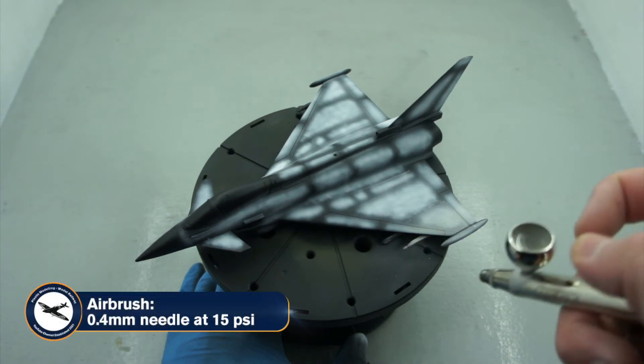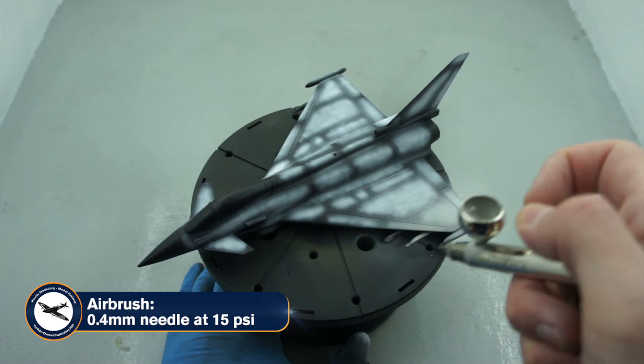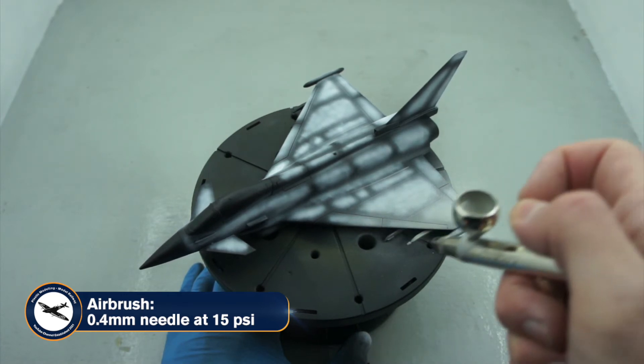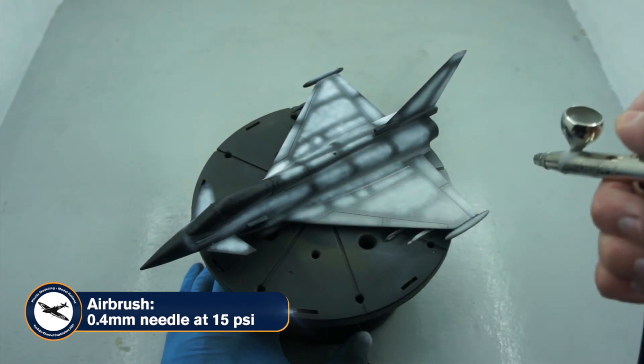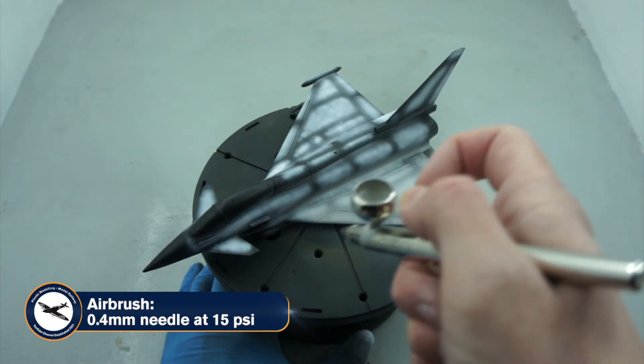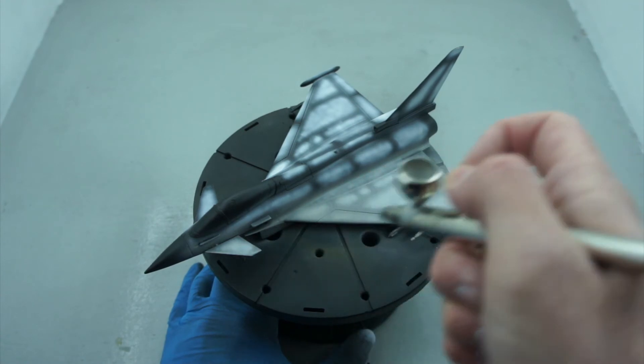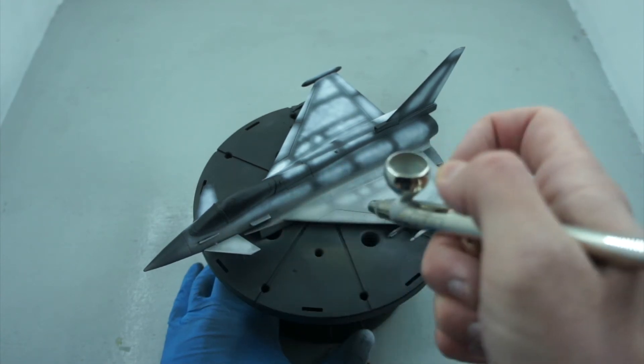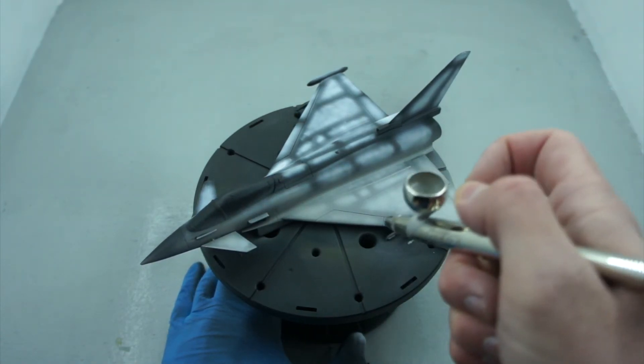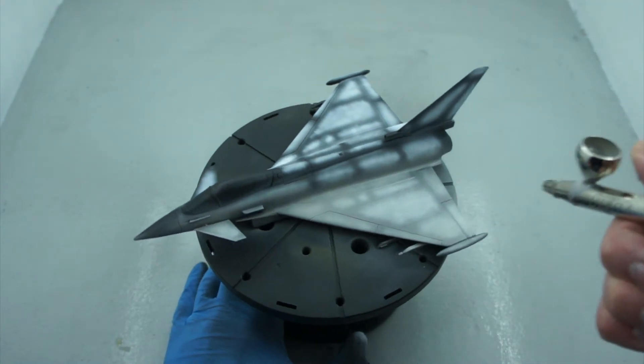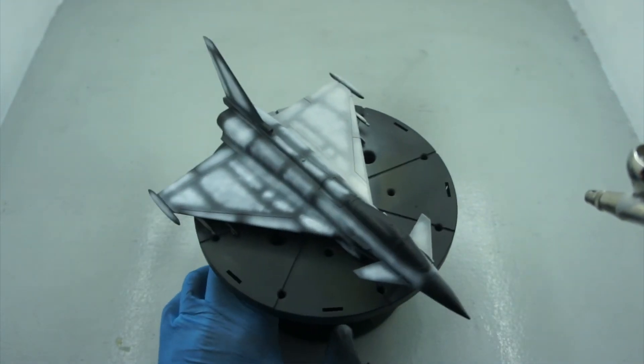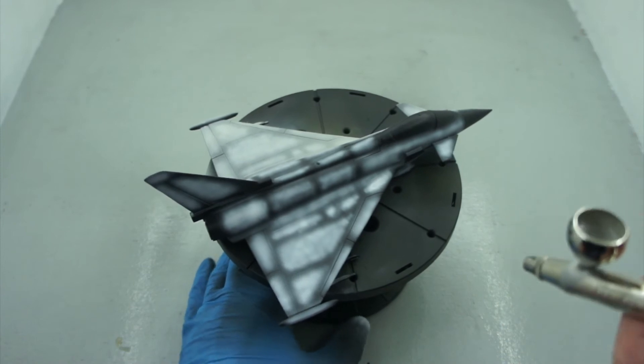Now swapping over back to a 0.4 millimeter needle and keeping it at 15 PSI for a while, I applied the XF-19 sky grey. I applied this in a few coats being very conscious and careful not to hide that pre-shading underneath. Again, it came out really nicely. The airbrush was fantastic.